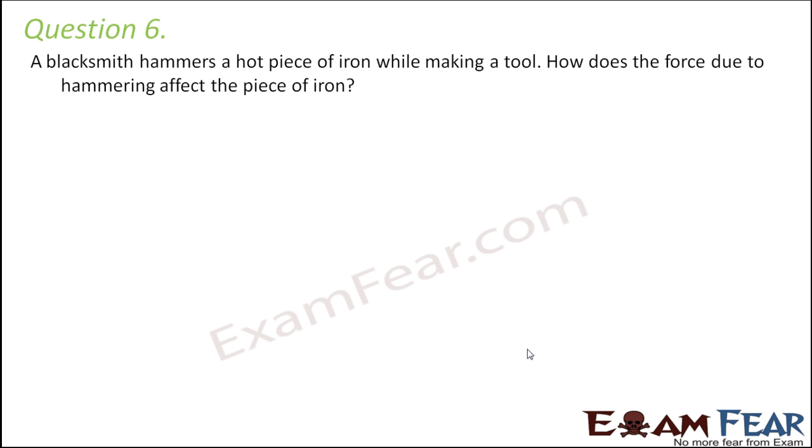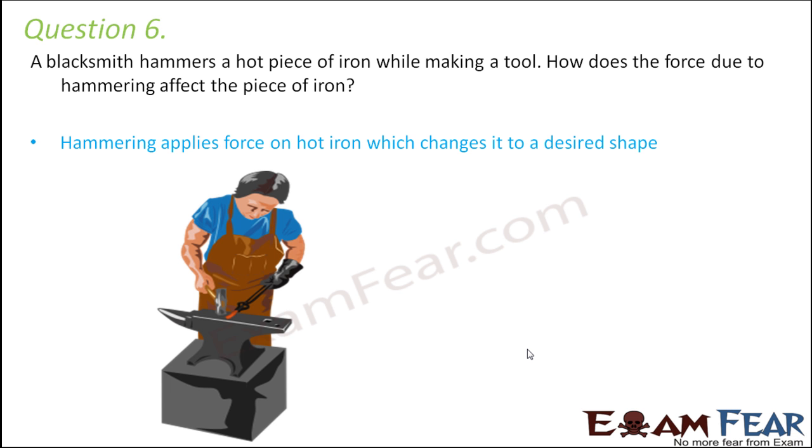Question number six. A blacksmith hammers a hot piece of iron while making a tool. How does the force due to hammering affect the piece of iron? Now, in this case, what happens is hammering applies a force on the hot iron, which changes it to a desired shape.